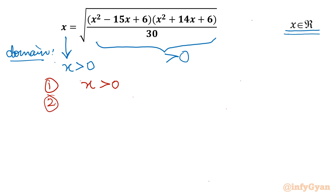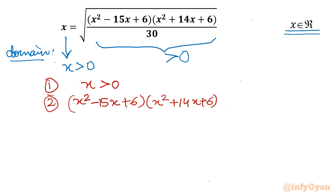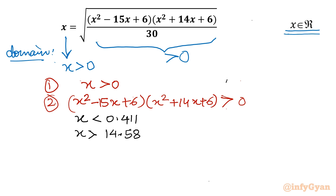The second condition from the RHS: the product (x² − 15x + 6)(x² + 14x + 6) must be positive. If we simplify using the number line method, the first bracket has two roots: x less than 0.411 and x greater than 14.58 are the valid regions (the exempted range is between the roots).